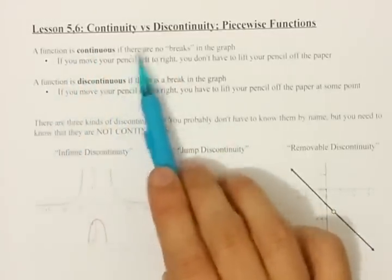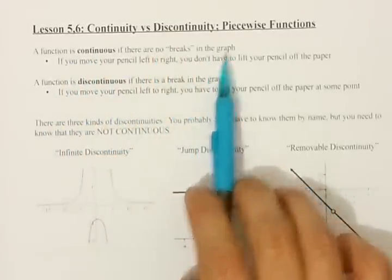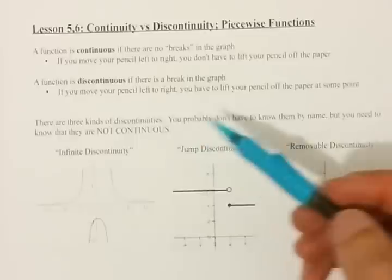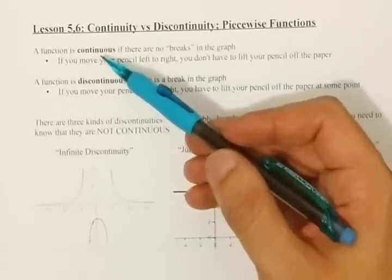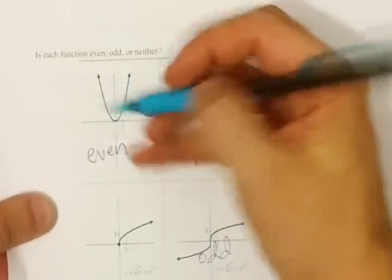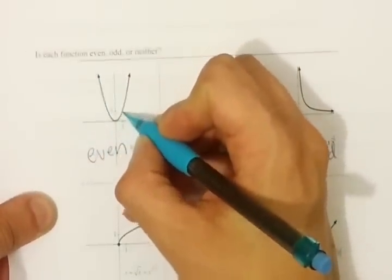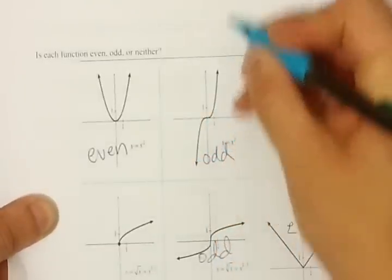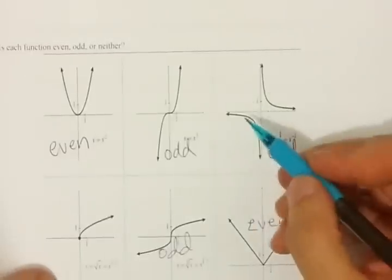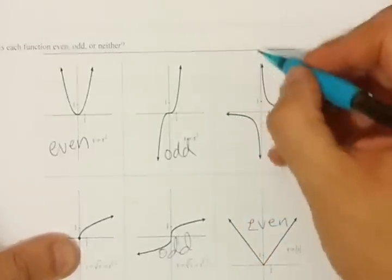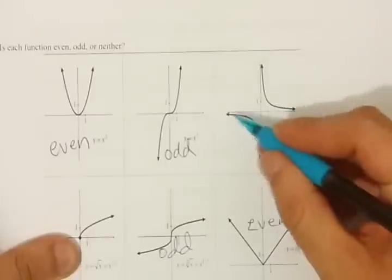A function is continuous if there are no breaks in the graph. If you move your pencil from left to right, you shouldn't have to lift your pencil away from the page in order to draw a continuous function. Almost all the functions you've ever seen have been continuous. From lessons three and four, this is a continuous function because I can draw it all in one swoop of my pencil. This would not be continuous because I have to draw this curve and then lift my pencil to draw the rest of this curve — I can't just connect the two.